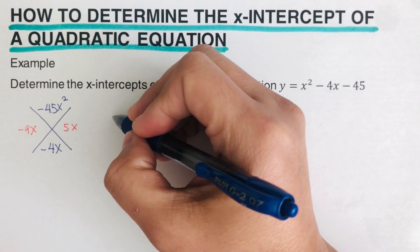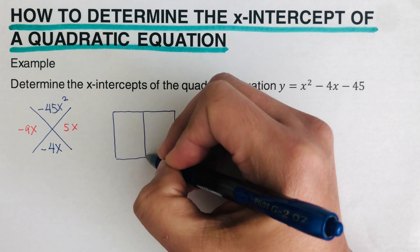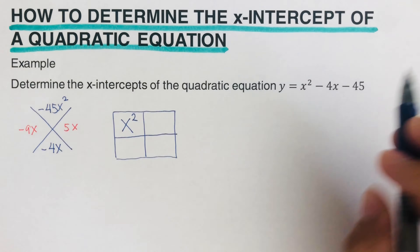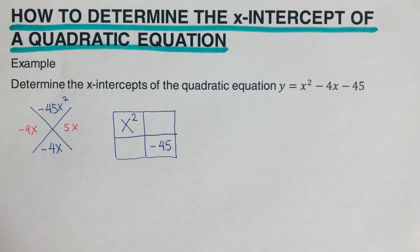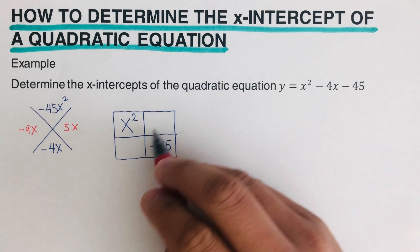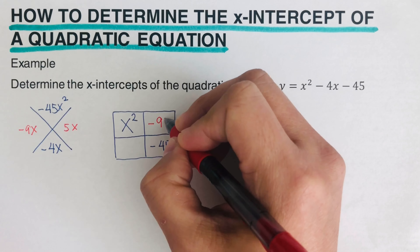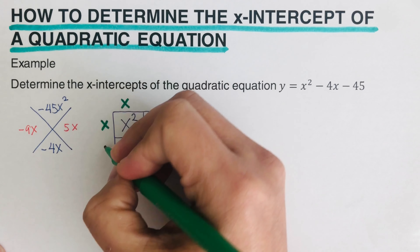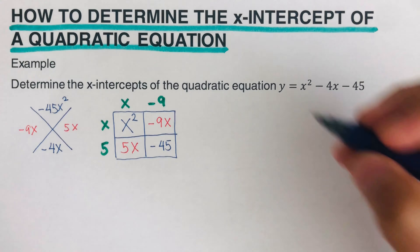Next, we put these into the box. We write the first term x squared and the last term negative 45 in the box, then write the factors negative 9x and 5x from the diamond into the remaining cells. From the box, we can extract the factors: x and x along one dimension, and 5 and negative 9 along the other.